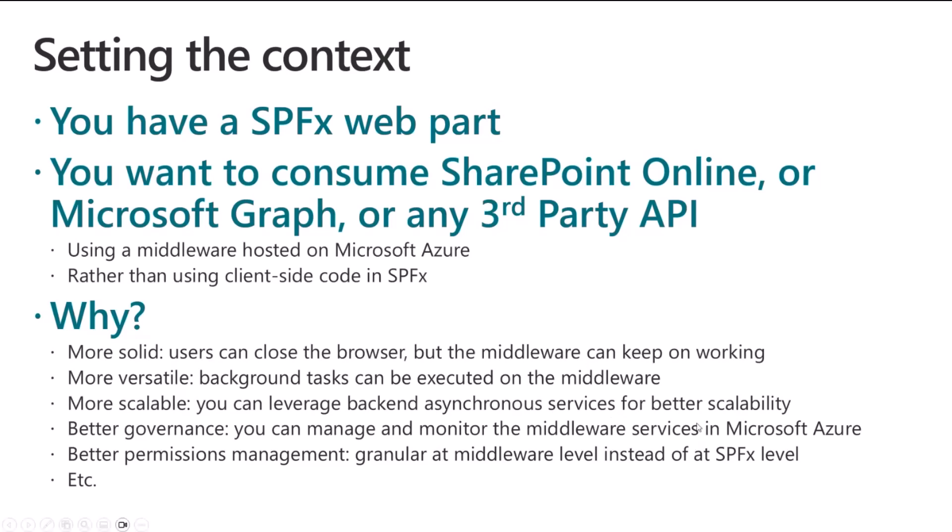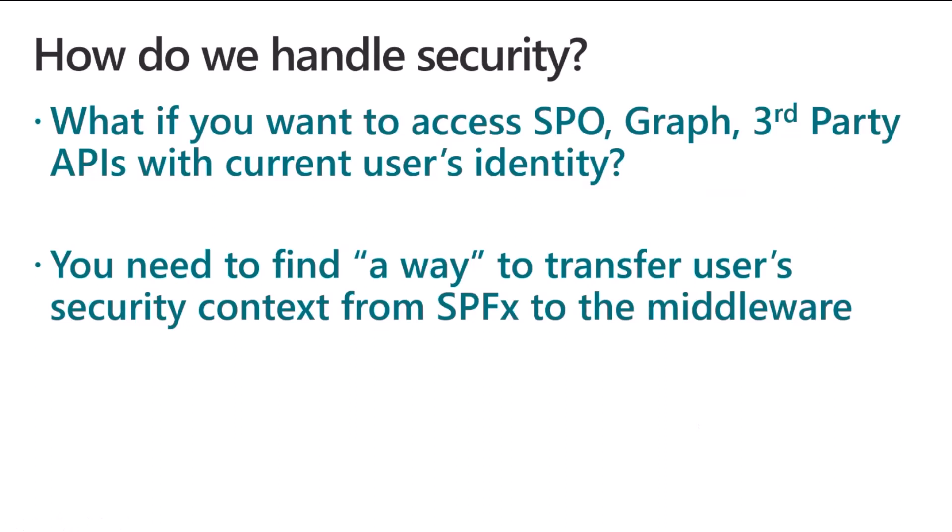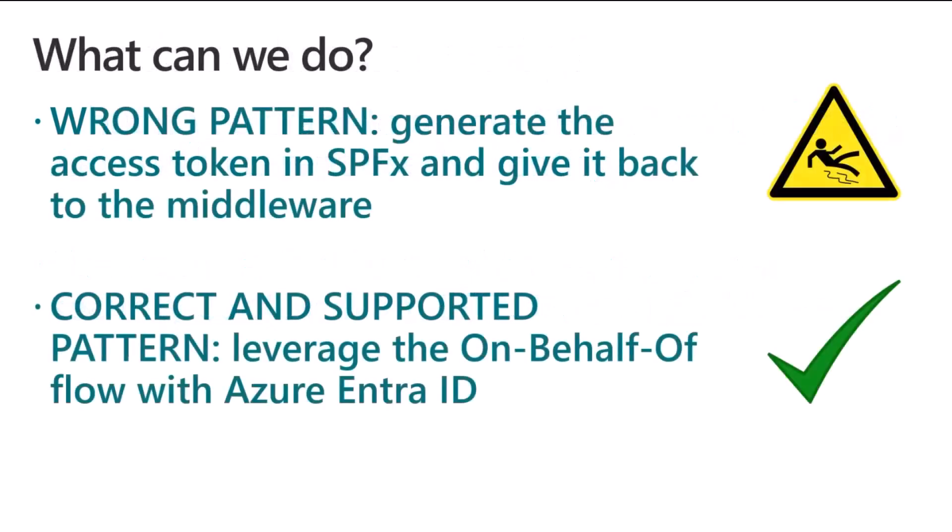When you do that in SharePoint Framework, you also need to take care of security because that's a fundamental component of your architecture. How can you manage security and be able to consume a back-end API — like SharePoint Online, Graph, or any third-party API — on behalf of the user identity? We have seen people using a pattern which I would like to clearly say is a wrong pattern: generating the access token to consume SharePoint Online, Graph, or whatever else inside the client-side code of SharePoint Framework, and then sharing that access token with the middleware API. Don't do that.